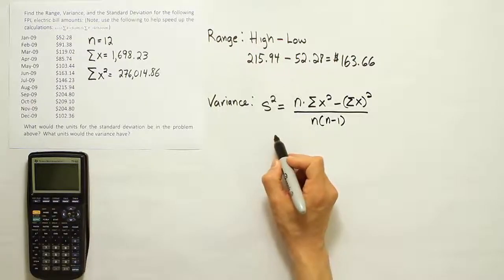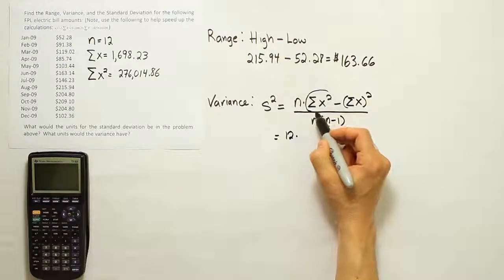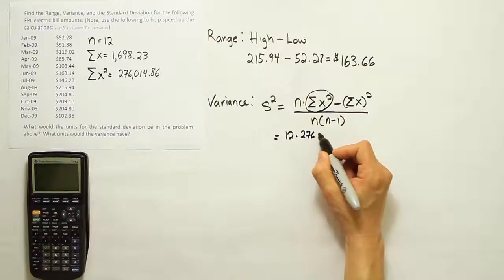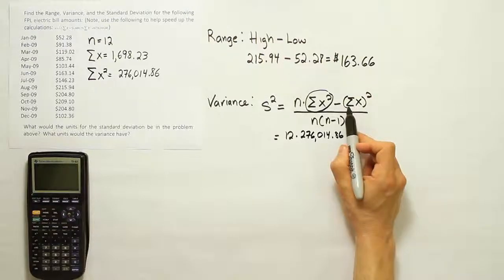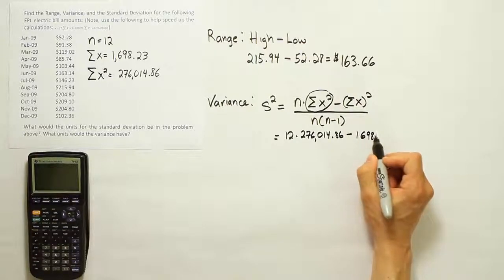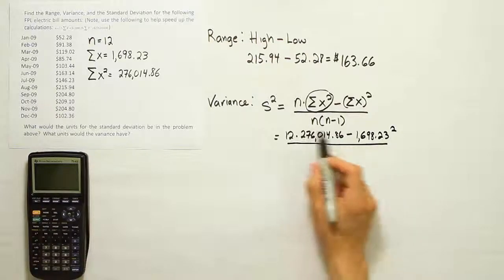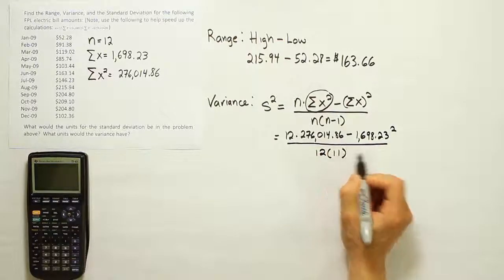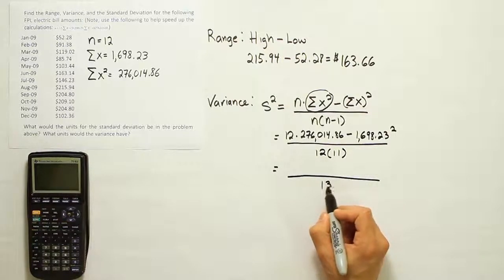Alright, so let's fill that out together. The N we have here, that's 12. The summation of X squared, that's one number, right? And that number is given to us. It's the 276,014.86 minus the summation of X, the summation of X is given as 1,698.23 squared. And then we will divide by N, which is 12 times 12 take away 1, which of course is 11. So the bottom of this fraction, 12 times 11, of course is 132.